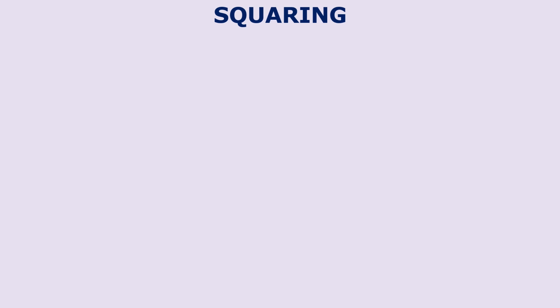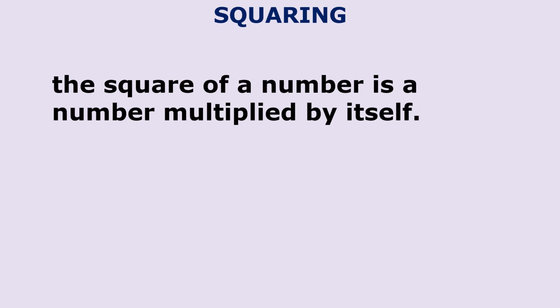Now let's see squaring. Here is another quick trick. As you probably know, the square of a number is a number multiplied by itself. For example, the square of 7 is 7 x 7 which is equal to 49.